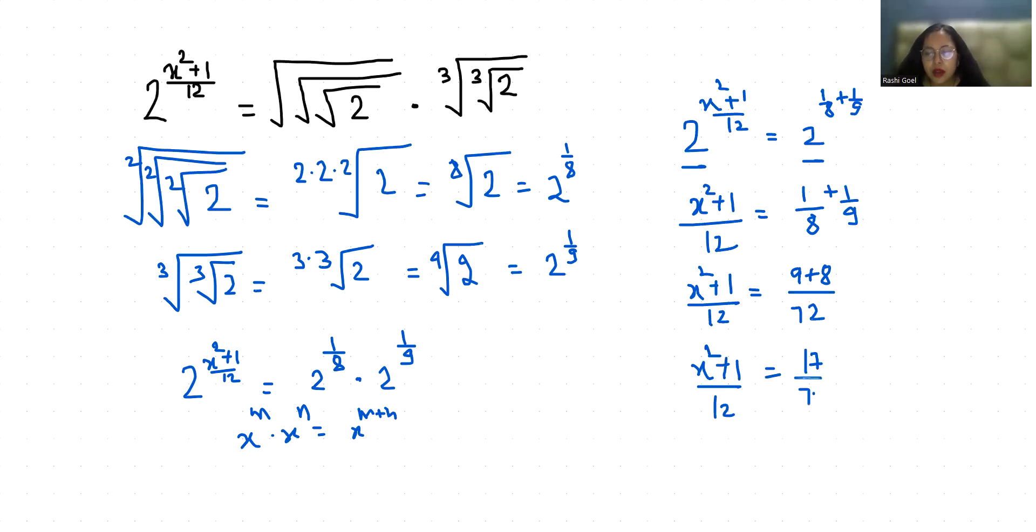So x square plus 1 by 12 goes to this side, 17 minus 1 by 12. So x square equals 17 times 12 by 72. We can cancel out 6 times. So x square equals 17 by 6. X square equals 17 by 6 minus 1, so x square equals 17 minus 6, that is 11 by 6. So x equals under square root 11 by 6.